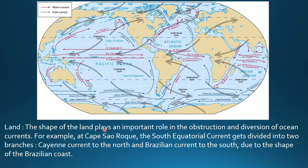The last factor is land. The shape of the land plays an important role in the obstruction and diversion of ocean currents. For example, at Cape São Roque, the South Equatorial Current gets divided into two branches due to the shape of the Brazilian coast — one branch flows northward as the Cayenne Current and the second branch flows southward as the Brazil Current.